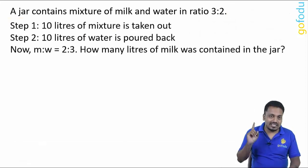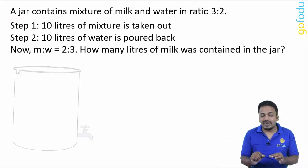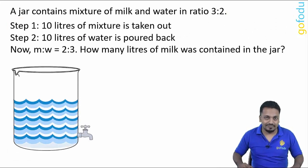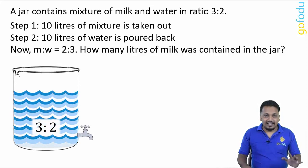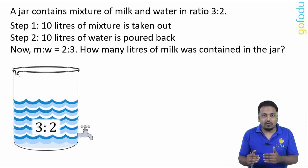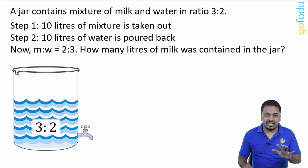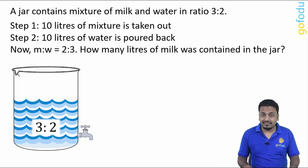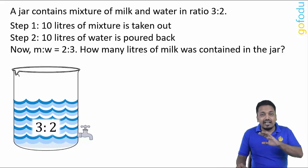Let's deal with step 1 when milk water ratio is 3:2 and 10 liter mixture is taken out. What will be the milk water ratio now in remaining solution? It is going to be 3:2 only as it is a uniform mixture and every part of the mixture has milk and water in 3:2 ratio.